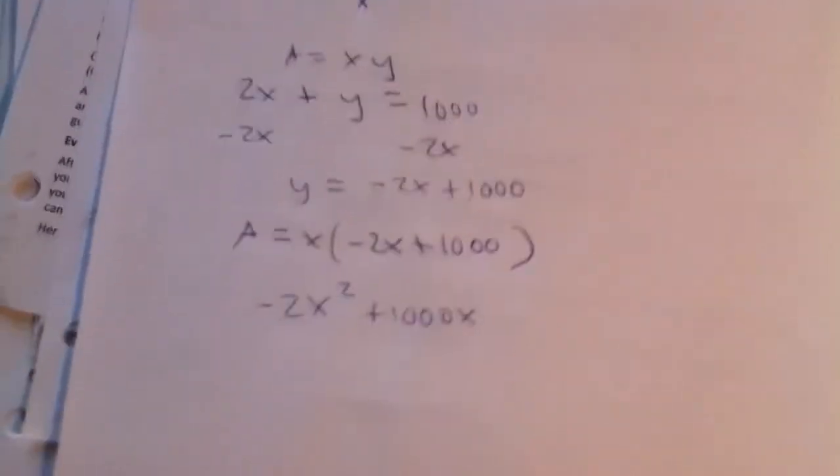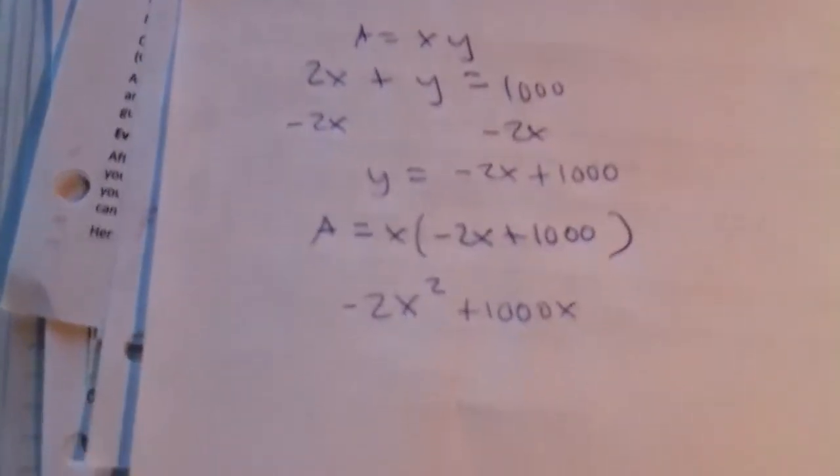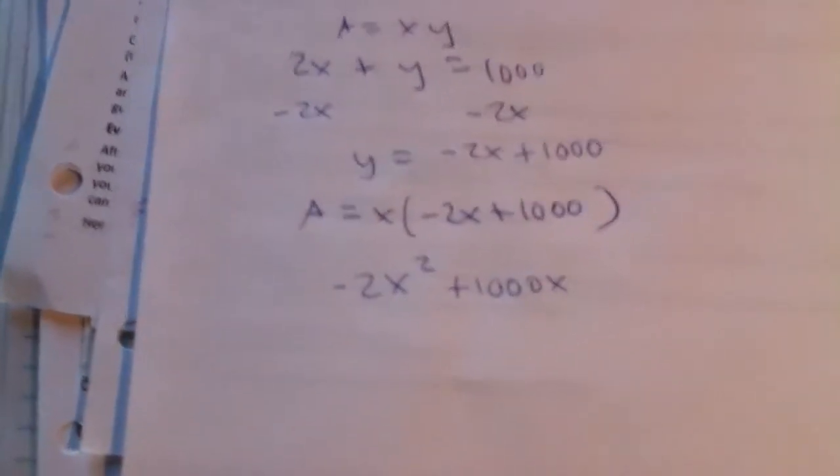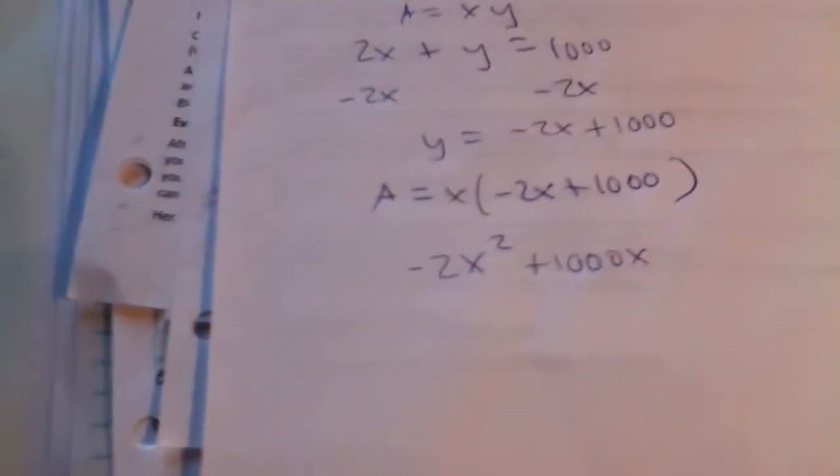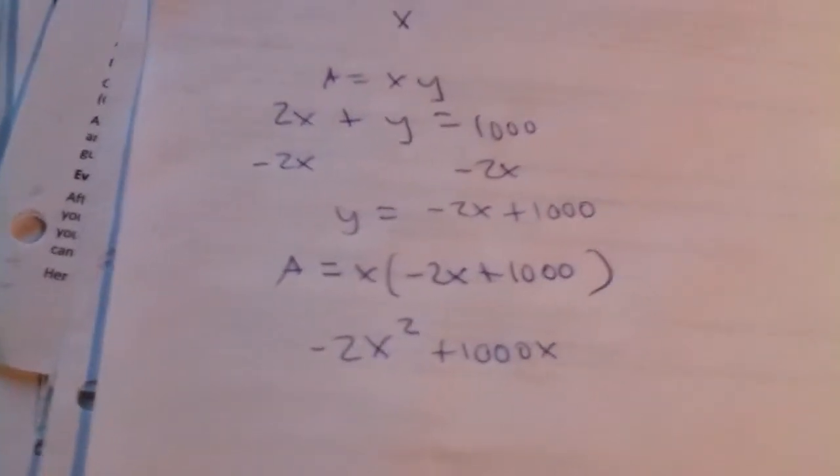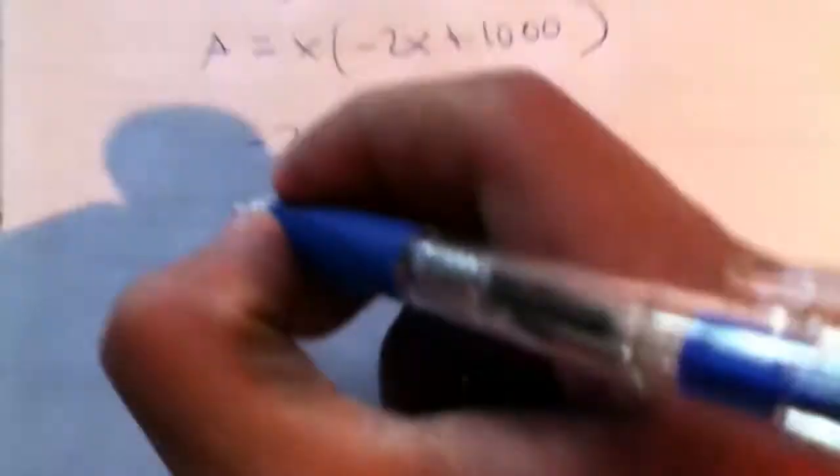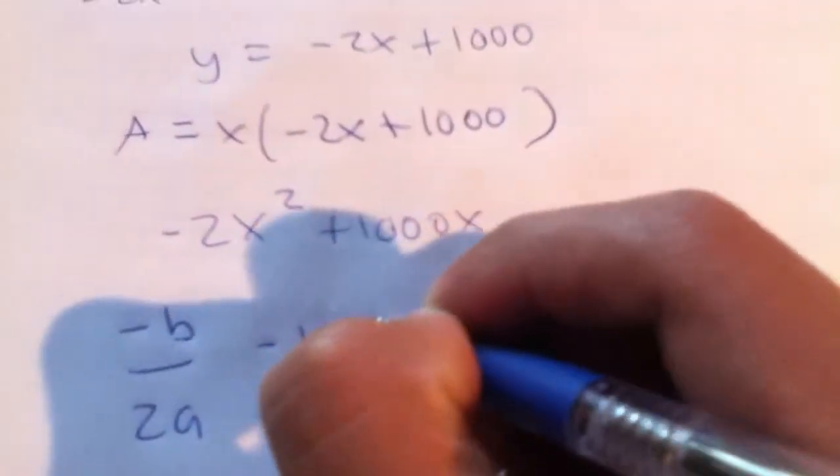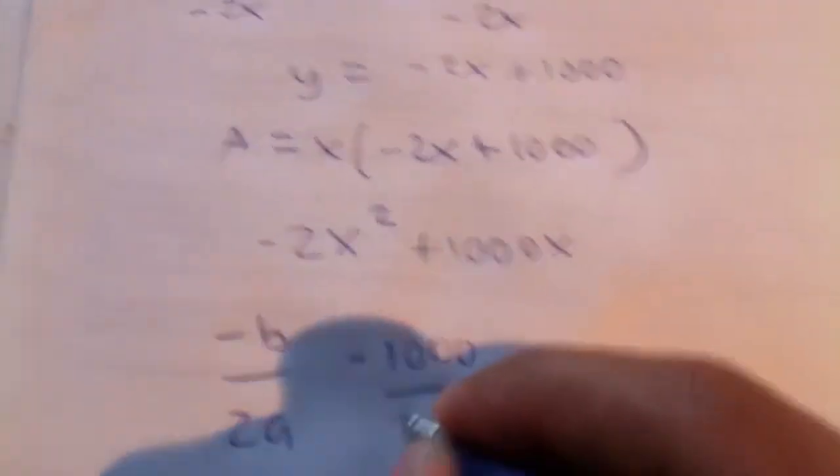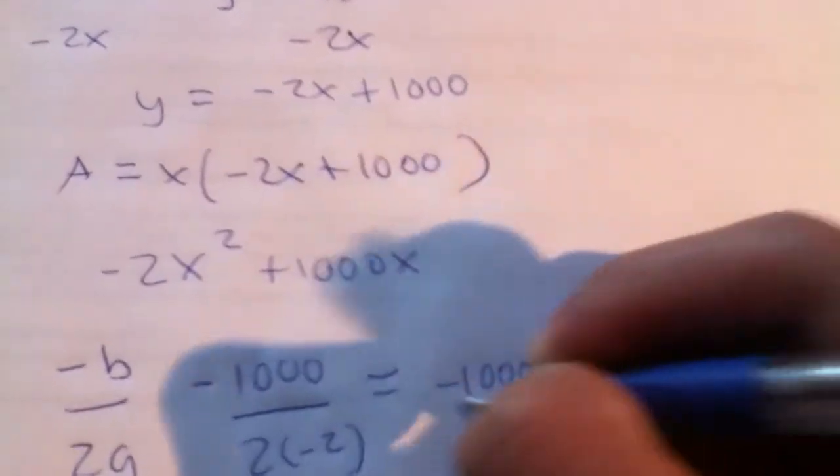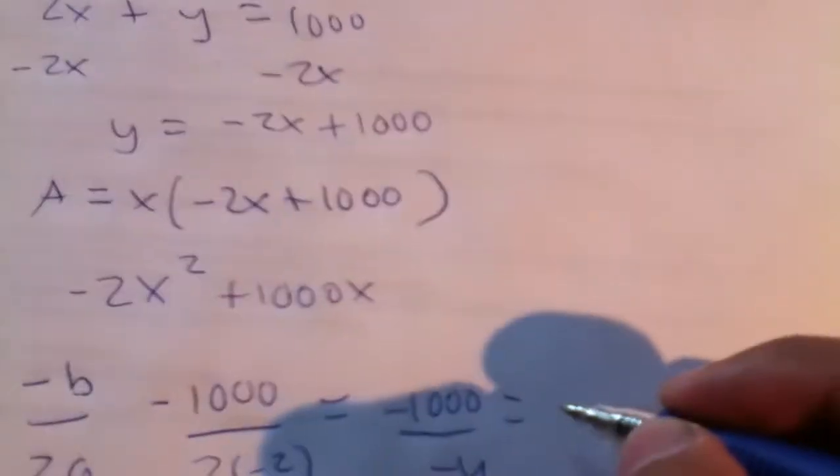Now, here it's very simple to find our x. In this case, if we were using a graphing calculator, it would be for the maximum. So, basically, the vertex, the highest point. And the formula for that is negative b over 2a. Our b is a thousand, so negative 1,000 over 2 times negative 2. And this comes out to be negative 1,000 over negative 4, which is 250.